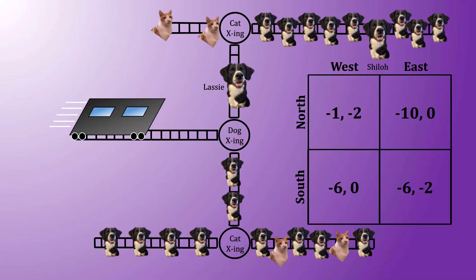As such, the only thing that's going to change is the way that the cat randomizes between west and east. The dog's welfare stays the same. In expectation, he's going to lose six.